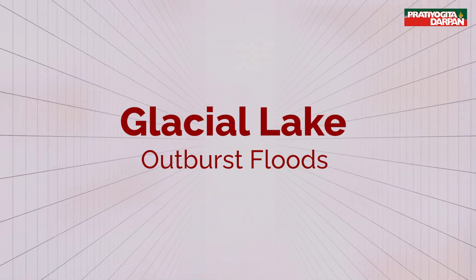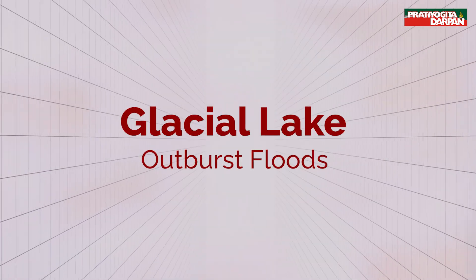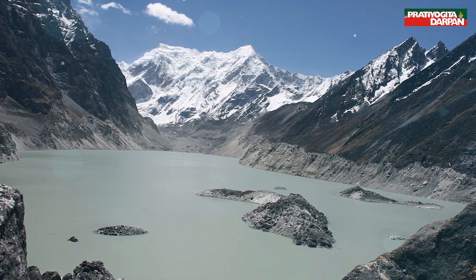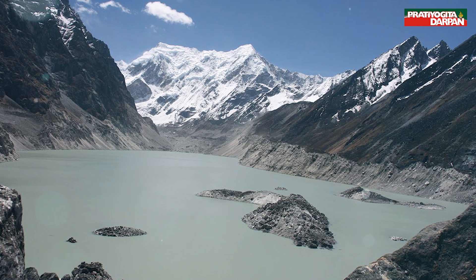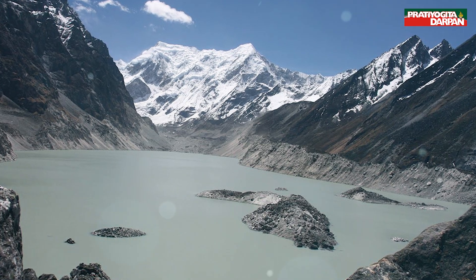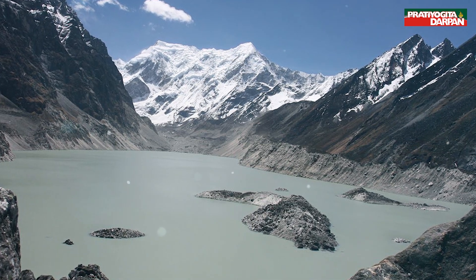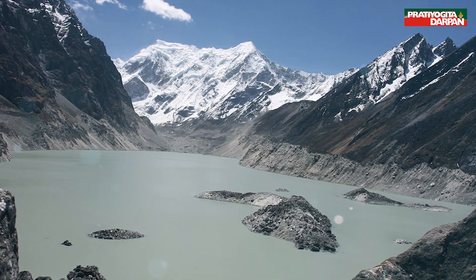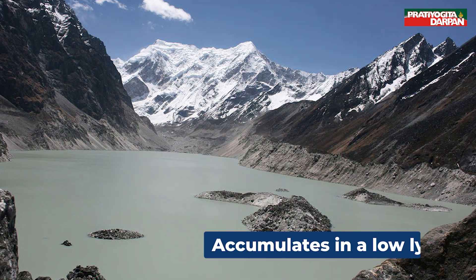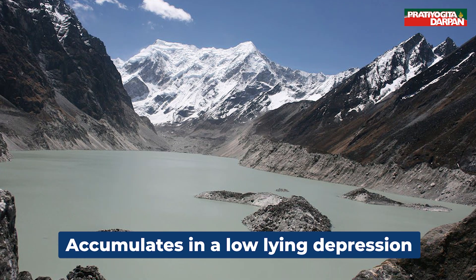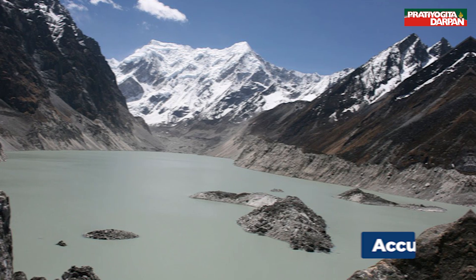Glacial lakes are large water bodies beneath a glacier. They are formed when water melting from glaciers accumulates in a low-lying depression.